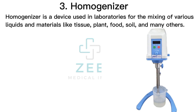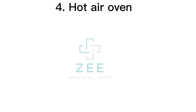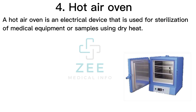A homogenizer is a device used in laboratories for the mixing of various liquids and materials like tissue, plant, food, soil, and many others. It is primarily used to disrupt cells to acquire cell organelles for different microbiological processes, and is used in the preparation step before the extraction and purification of different macromolecules.